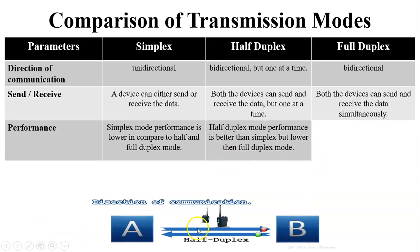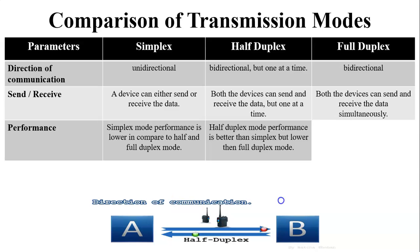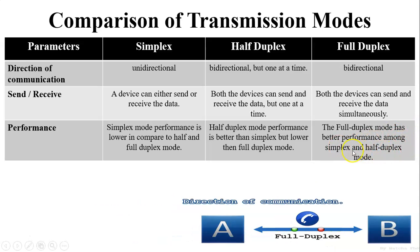In half duplex mode, both are senders and both are receivers, but at the same time only one is the sender and one is the receiver. So half duplex performance is better than simplex but lower than full duplex, as sending and receiving messages is a time-consuming process. In full duplex mode, performance is the best among all three modes because both devices are sender and receiver at the same time — full duplex is the best mode overall.